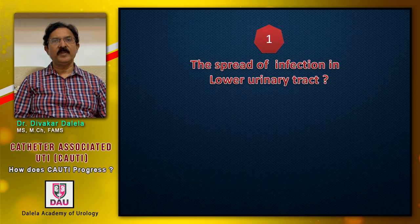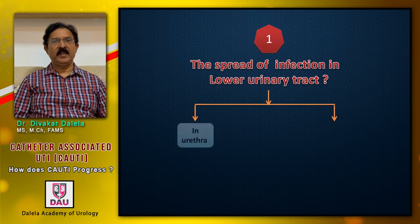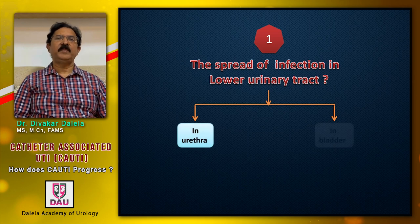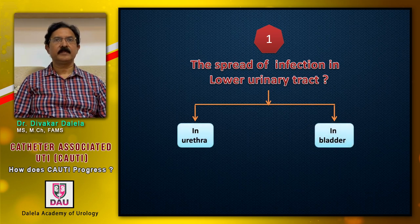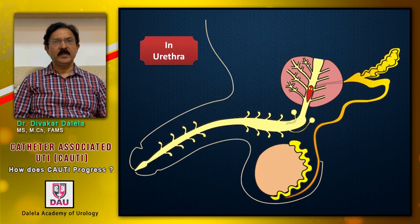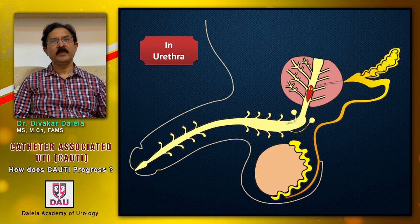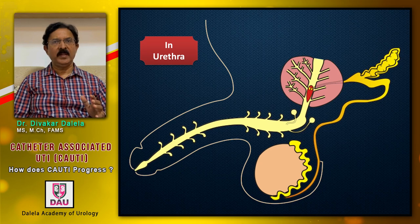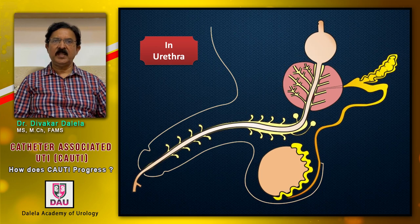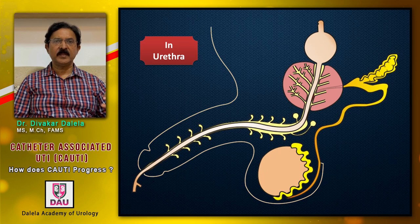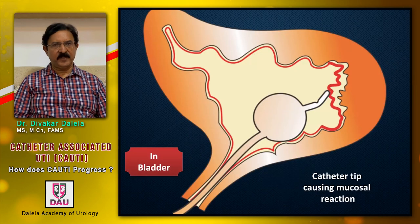Let me explain firstly the spread of infection in the lower urinary tract — the spread of infection in the urethra and in the bladder. In the urethra, the normal urethra is a conduit for the flow of urine and semen. It is not used to having an occluding mechanism like a catheter shaft. If one places a catheter in the lumen of the urethra, which occupies a substantial space in it, the urethra will react, irritation will happen, and infection can develop.